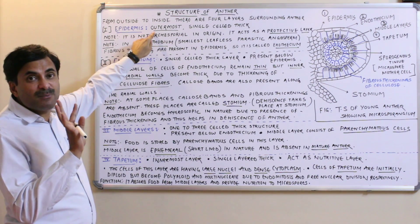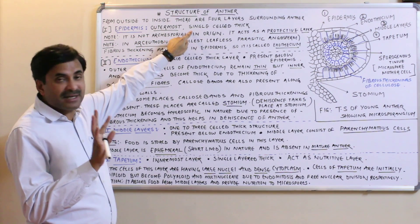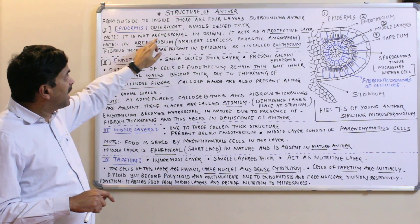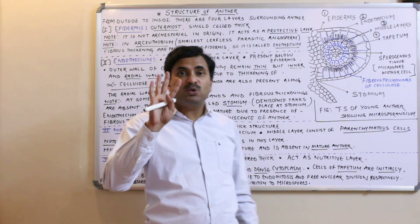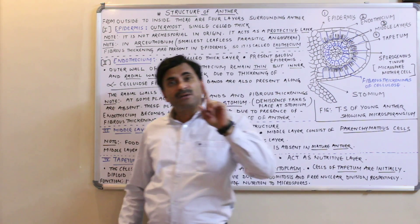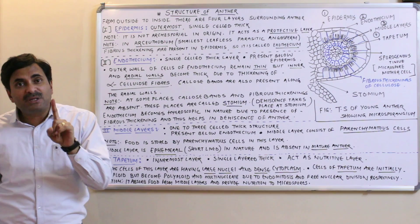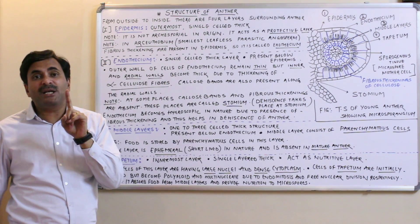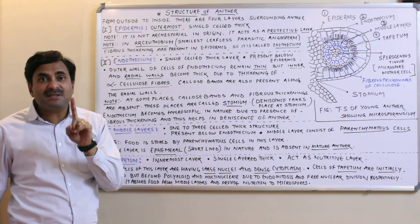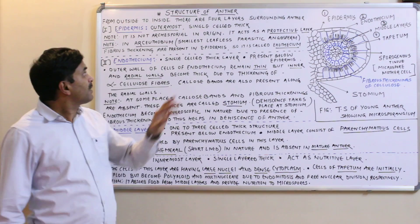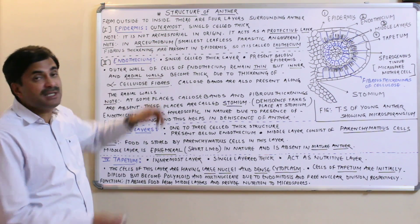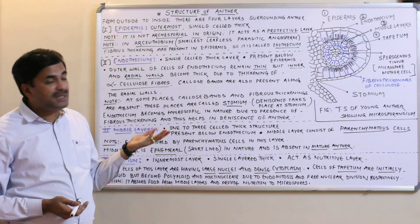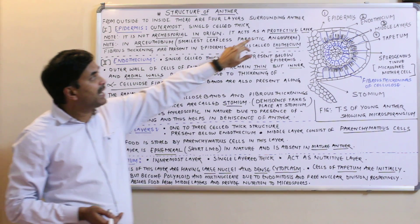The epidermis, as you can see in the diagram, is the outermost layer surrounding the anther. It is single cell thick — not multilayered. It is not archesporial in origin. Out of the four layers surrounding the anther, the three layers — endothecium, middle layers, and tapetum — are archesporial in origin, but epidermis is not.